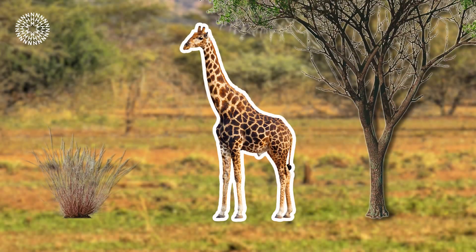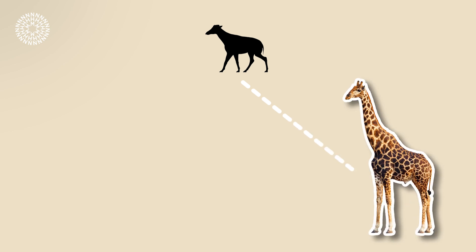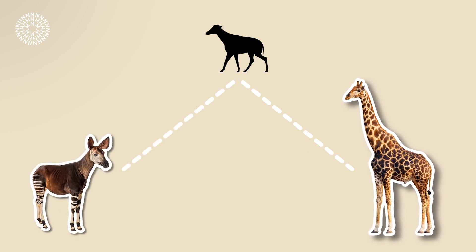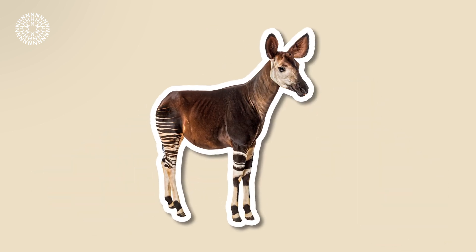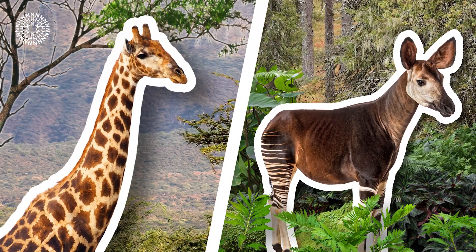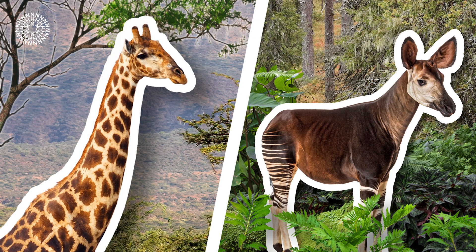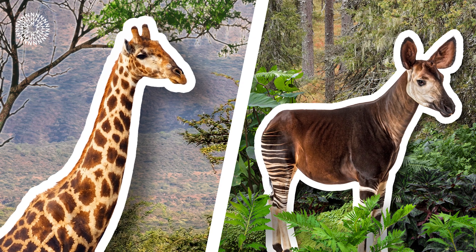But those ancient ancestors didn't evolve into just giraffes. Evolution went in different directions — that's how we also ended up with the giraffe's relative, the okapi, whose adaptations helped them to survive in dense forests. Both the giraffe and the okapi are very different, but they evolved from the same common ancestor and took different evolutionary paths because of the different environments they lived in.